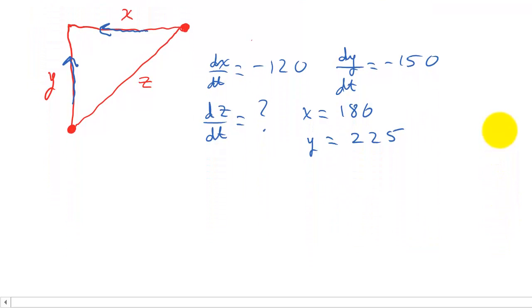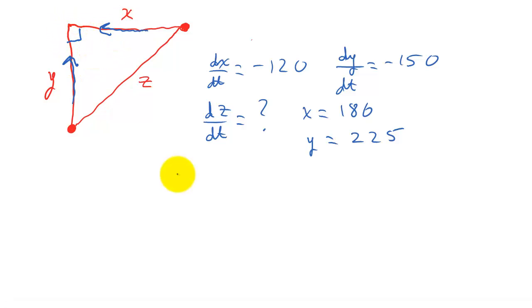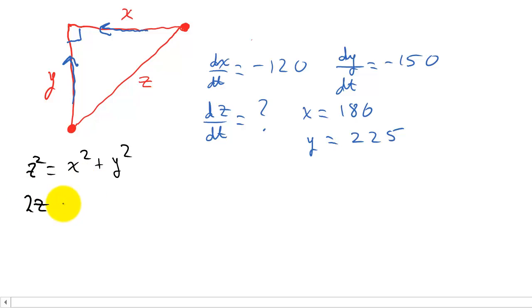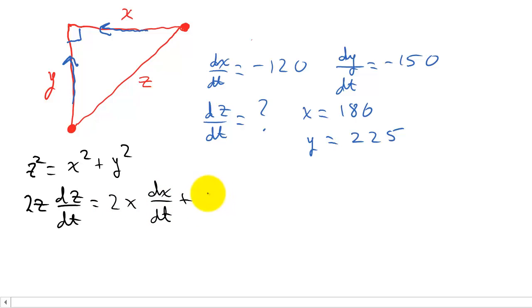Let's set up our equations. We know this is a right triangle because one plane is flying west and the other is flying due north, so they intersect at a 90-degree angle. By the Pythagorean theorem: z² = x² + y². Now I differentiate with respect to time t, giving us: 2z · dz/dt = 2x · dx/dt + 2y · dy/dt.